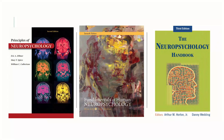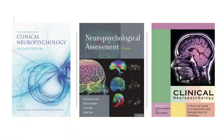But first, let's see the manuals that I recommend to you today. The first is the principles of neuropsychology. The second is the fundamentals of human neuropsychology. The third is the neuropsychology handbook. The fourth is the handbook of clinical neuropsychology. The fifth is the neuropsychological assessment. And the sixth is the clinical neuropsychology. Now let's take a brief look on the neuropsychology of personality.